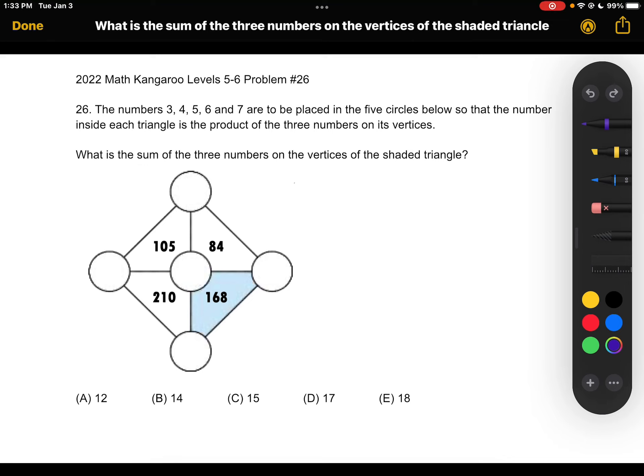Okay, so as the problem says, we have these numbers to place in the circles, such that the number inside each triangle is the product of the three numbers on its vertices.